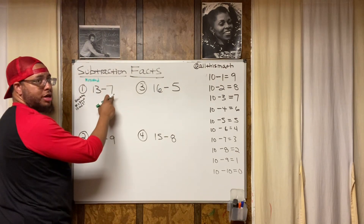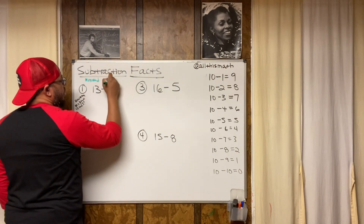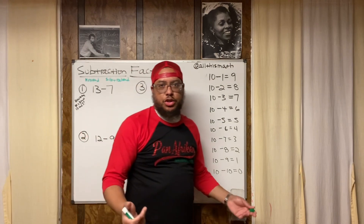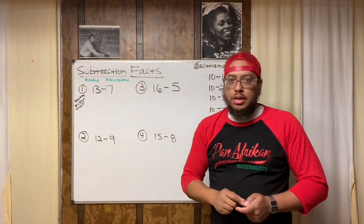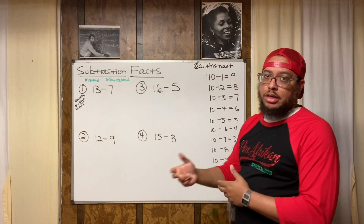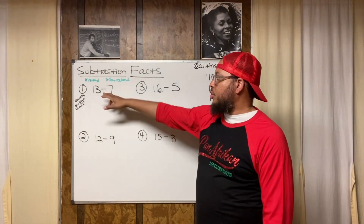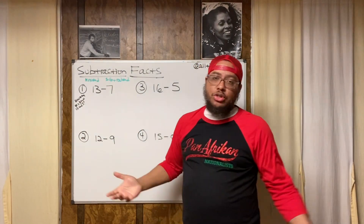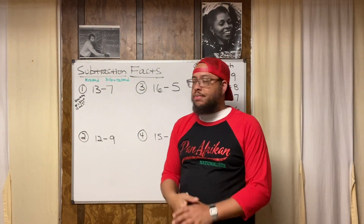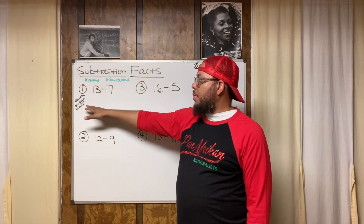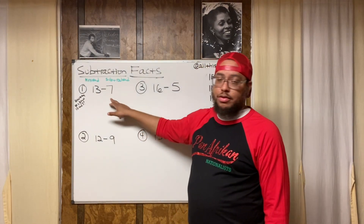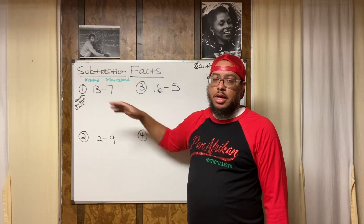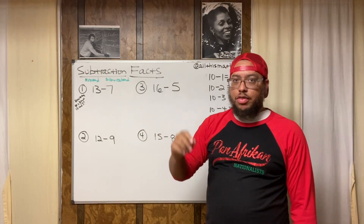The second number in a subtraction problem is called the subtrahend. You might not hear those terms used that frequently, but it's good to know them. We're trying to figure out how many numbers are between 13 and 7, because that's going to be our answer — the difference between 13 and 7. That's why the answer in a subtraction problem is called the difference.